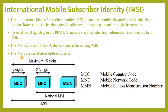The IMSI consists of three different parts: MCC — Mobile Country Code, MNC — Mobile Network Code, and MSIN — Mobile Station Identification Number. According to the GSM specifications, the IMSI has a maximum length of 15 digits.